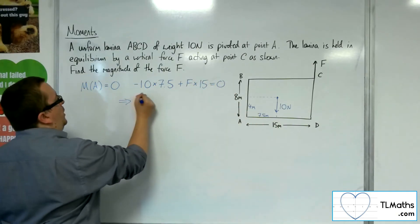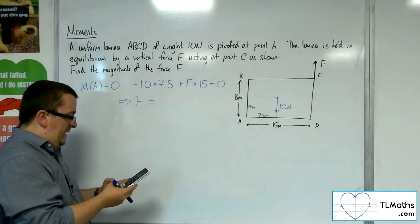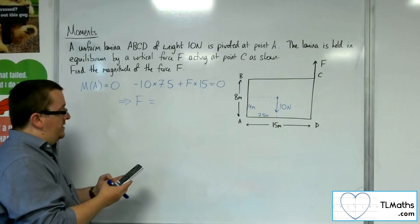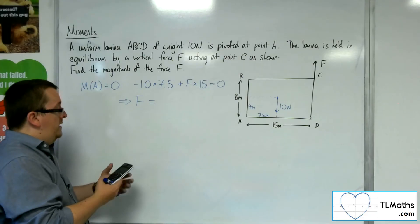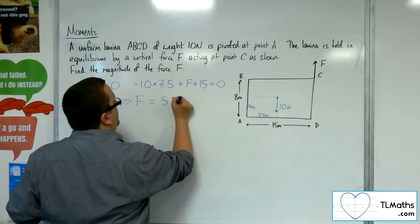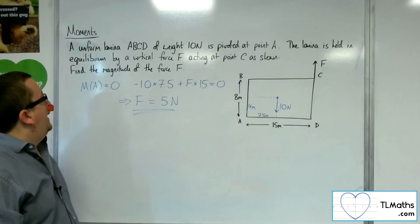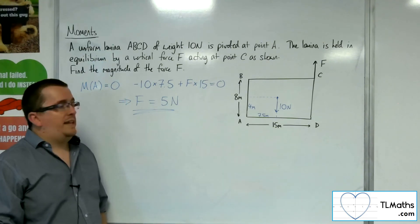So that gives me an equation for F. We've got 10 times 7.5, so 75, divided by 15, and that gets me 5. So F would have to be 5 newtons in order for the lamina to be held in equilibrium.